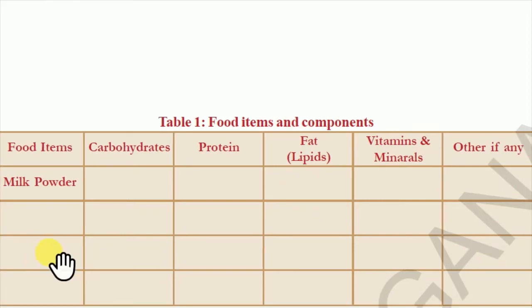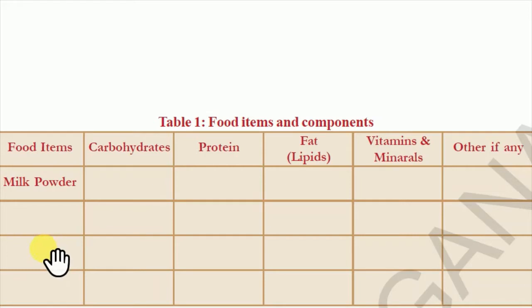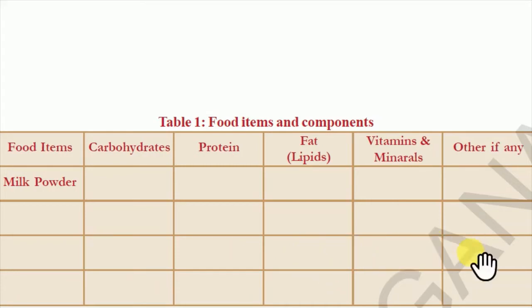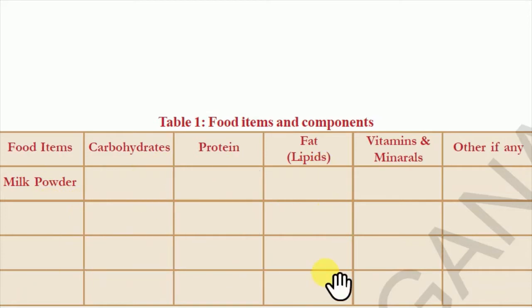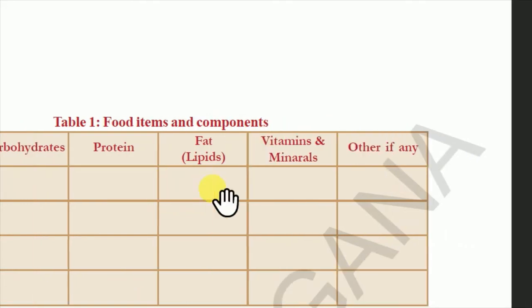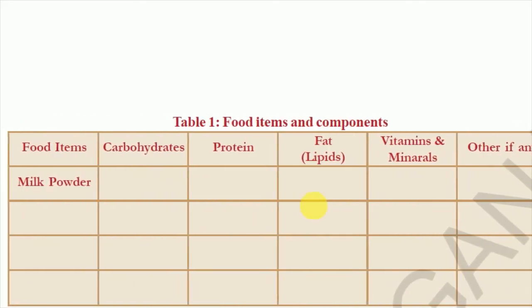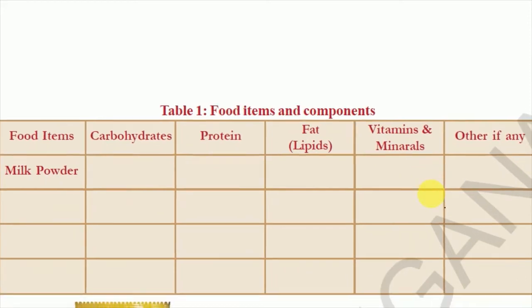Make the table in a big size — the column shown here is small, but you need to make it larger. Try to fill another two food items. For fruit juice: carbohydrates are present, proteins are very little, fats are not present, vitamins are present. You can also mention curd or any food items you like. Take a sheet of paper or a book and complete this whole thing so you will understand.